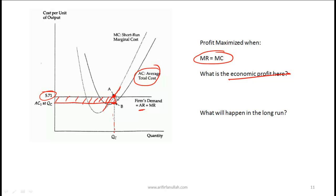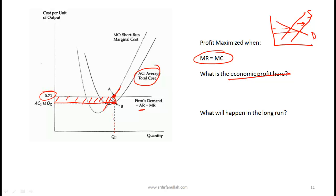What will happen in the long run? If an economic profit is to be made, more firms will enter the market. If more firms enter the market, the price will fall. Looking at the simple supply and demand for the market — if more firms enter, the supply curve shifts to the right and price falls. When price falls, the marginal revenue curve comes down until there are no more economic profits. In the long run, economic profit will be zero.